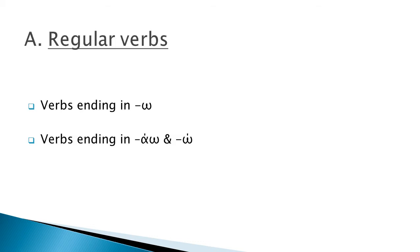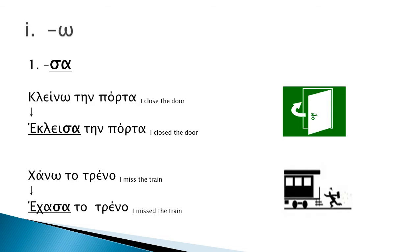We are looking now into regular verbs. We divide regular verbs into two categories: the omega-ending verbs first, and the ao and omega-with-an-accent ending verbs second. The omega-ending verbs change in the past to Sa. This is the most common ending in the simple past and, if we may say so, a pretty safe option if you are in a guessing mood.